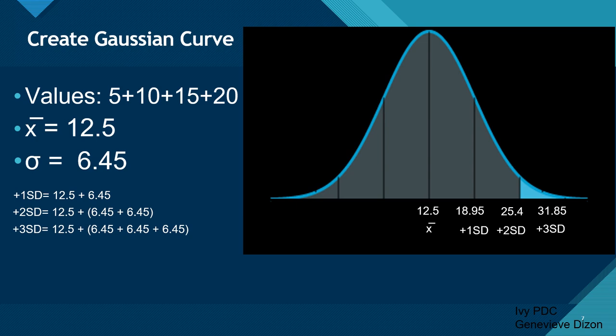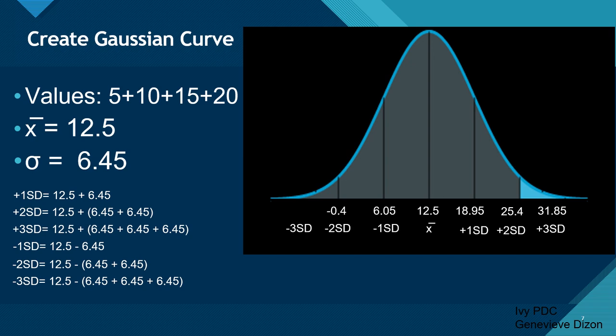For the left side, representing the 50% lesser than the mean, we subtract from 12.5. For negative 1SD: 12.5 minus 6.5 gives 6.05. For negative 2SD, we subtract two standard deviations from the mean, giving negative 0.4. And for negative 3SD, subtracting three standard deviations from the mean gives negative 6.85.